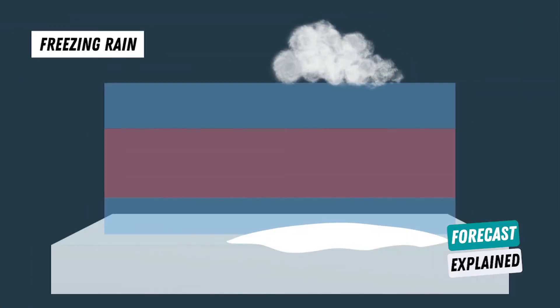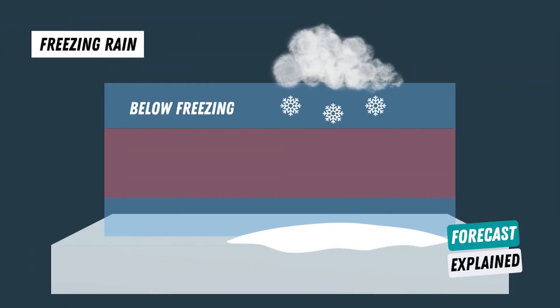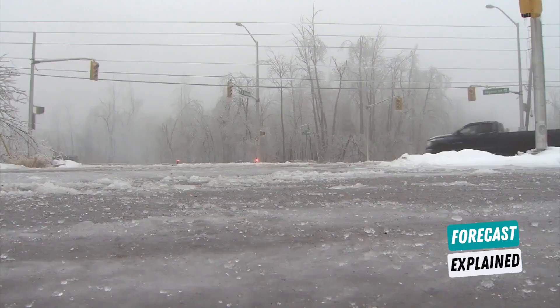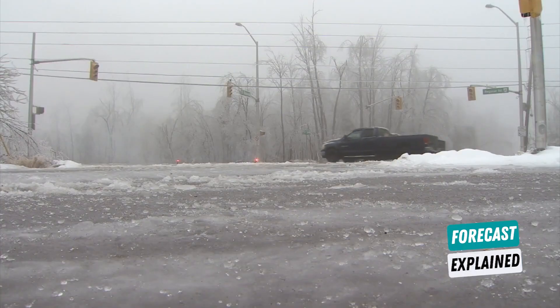Freezing rain begins as snow that melts to rain when falling through a warm layer above the surface. This rain then freezes when hitting frozen ground.